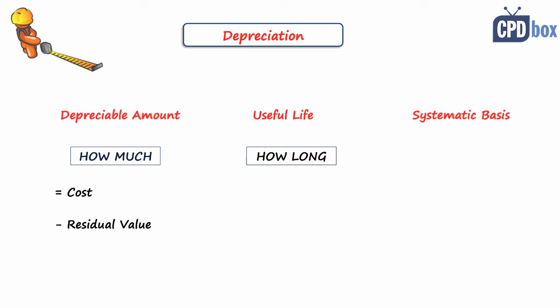Useful life is the period over which an asset is expected to be available for use by an entity. Or alternatively, it is also the number of production units expected to be obtained from the asset by the entity. So an asset might be depreciated either based on time or based on number of units produced. Useful life depends on many factors such as expected wear and tear, legal or technical limits, etc.